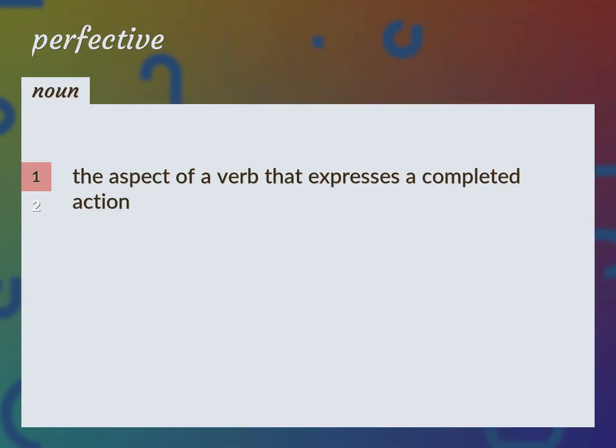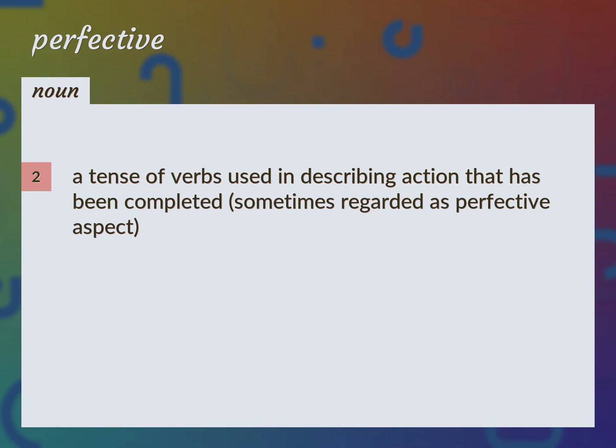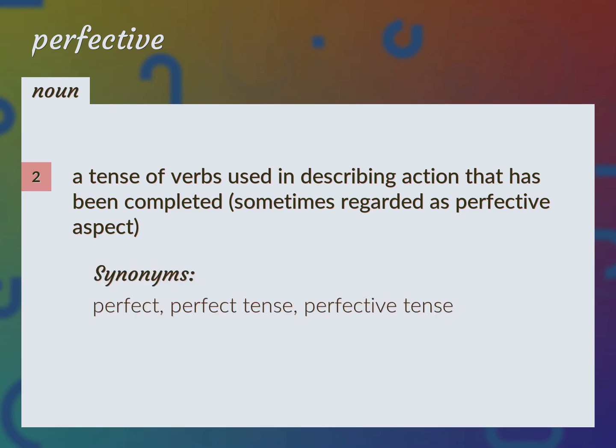The aspect of a verb that expresses a completed action: perfective aspect. A tense of verbs used in describing action that has been completed, sometimes regarded as perfective aspect. Perfect, perfect tense, perfective tense.